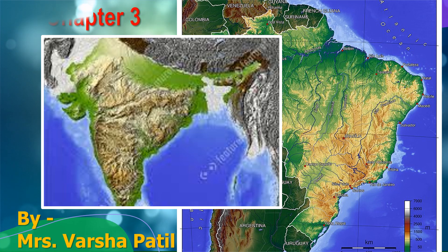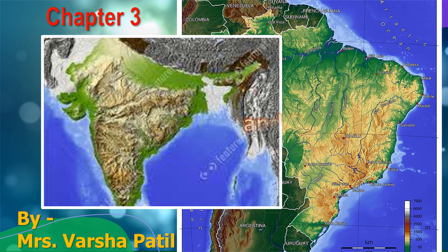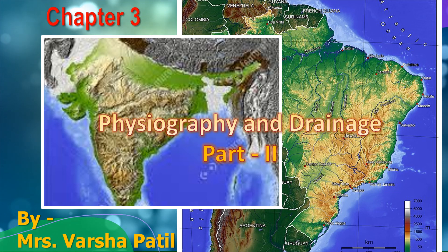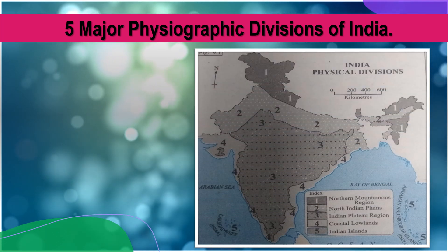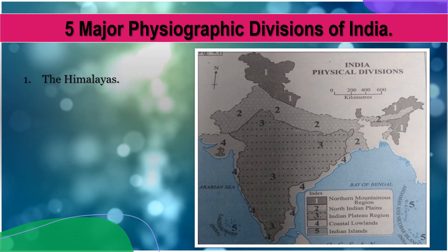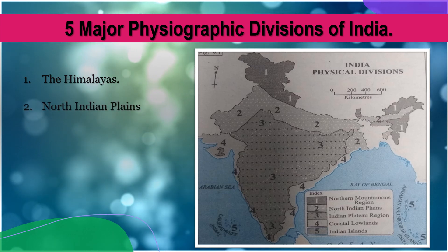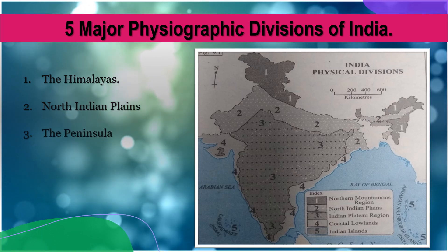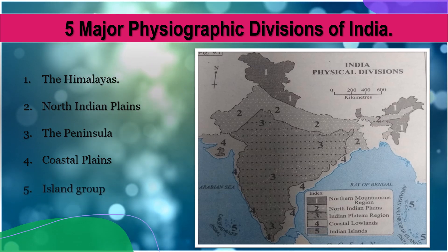Welcome back students to our second session of Chapter 3, Physiography and Drainage. Today we will study the Physiography of India in detail. The following figure shows Physiography of India. We already know that India is divided into five major physiographic divisions: the first, the Himalayas; second, the North Indian Plains; third, the Peninsula or the Indian Plateau; fourth, the Coastal Plains; and fifth, the Island Group.